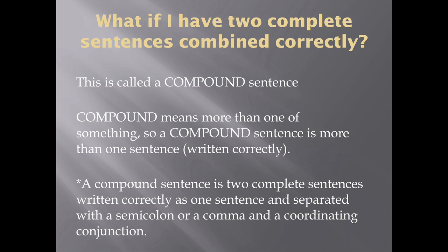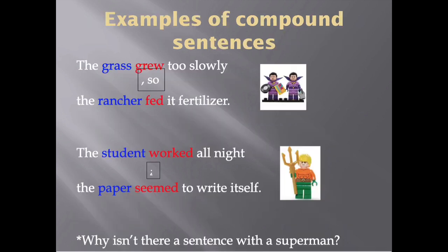Now, what if you actually have two complete sentences that are combined correctly? Well, that is called a compound sentence. A compound sentence means that you have more than one sentence written correctly. Here's the full definition, which you will need to know for the remainder of the year: a compound sentence is two complete sentences written correctly as one sentence and separated with a semicolon, or a comma and a coordinating conjunction.